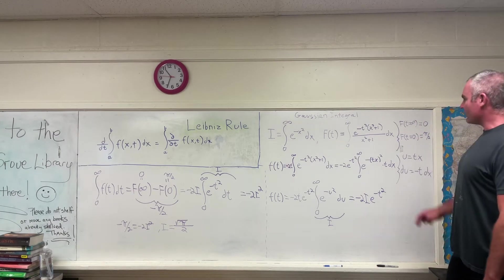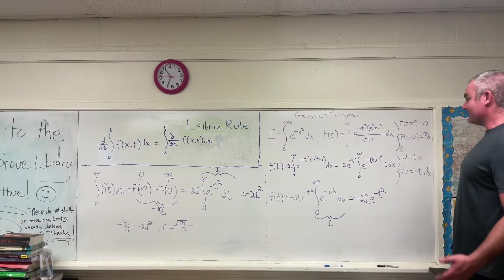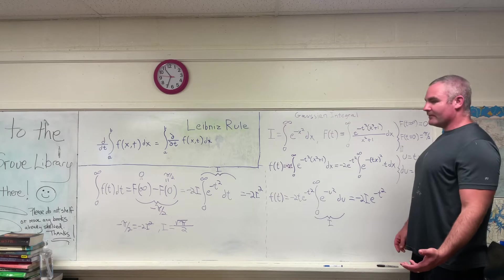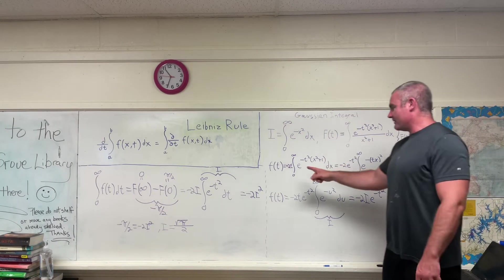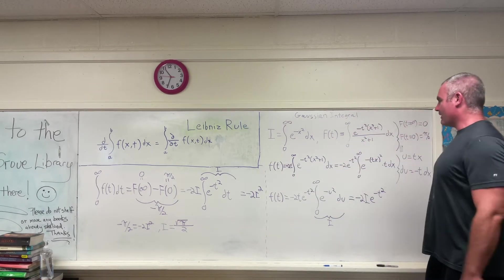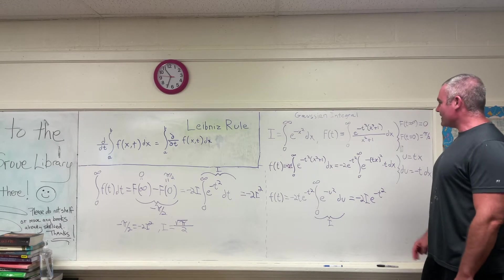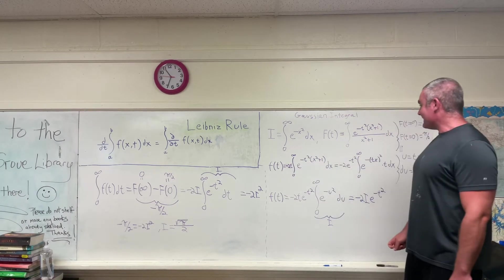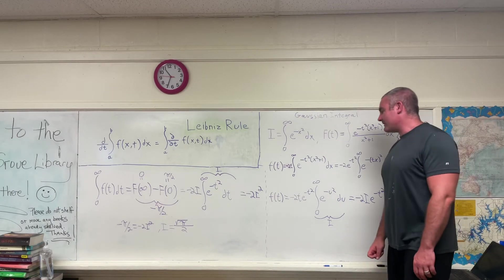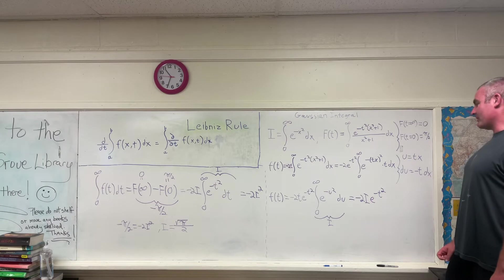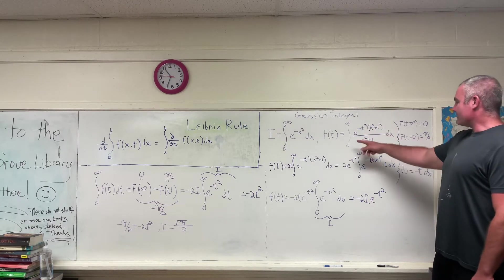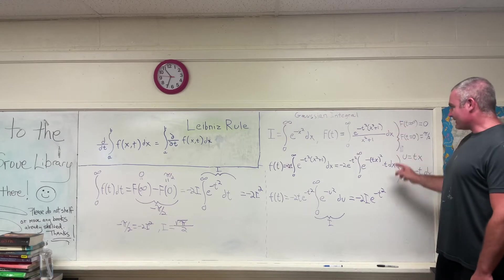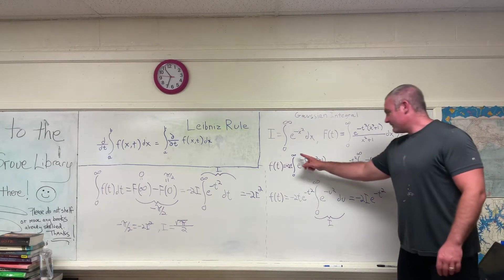Now we're going to do the standard thing where we differentiate this with respect to T using the Leibniz rule to arrive at little f of T — because if you differentiate an antiderivative, you get back the original function. The original function in this case is negative two T times the integral from zero to infinity of e to the negative T squared times x squared plus one DX. That's just differentiating the numerator with respect to T — taking a partial derivative with respect to T gives you this.